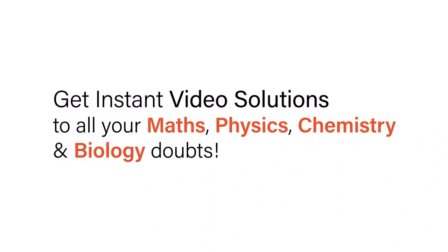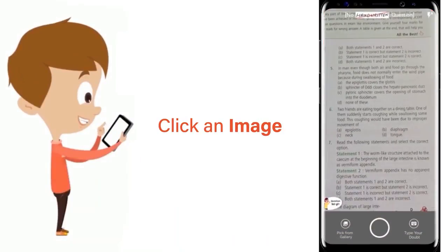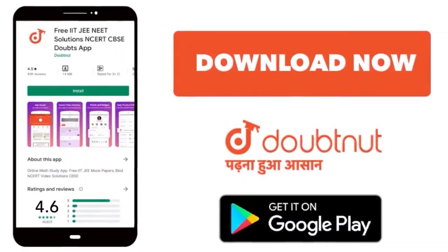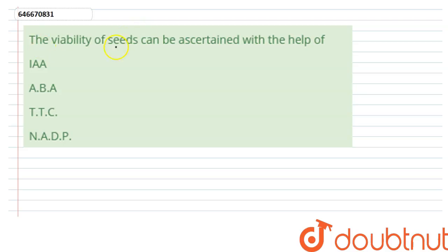With Doubtnet get instant video solutions to all your maths, physics, chemistry and biology doubts. Just click the image of the question, crop the question, and get instant video solution. Download Doubtnet app today. The question says the viability of seeds can be ascertained with the help of IAA, ABA, TTC, or NADP.